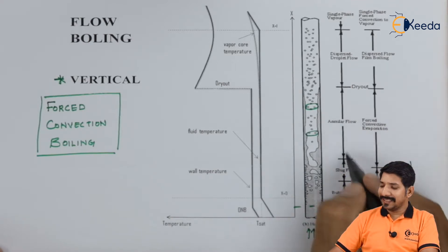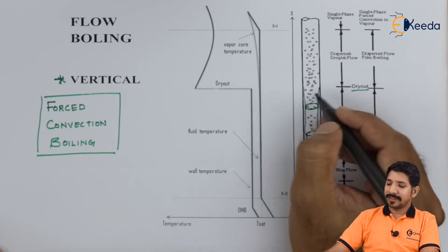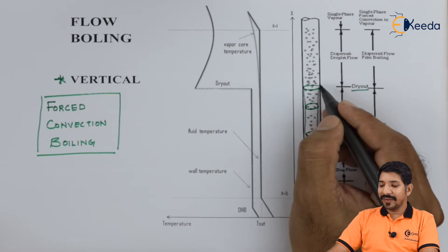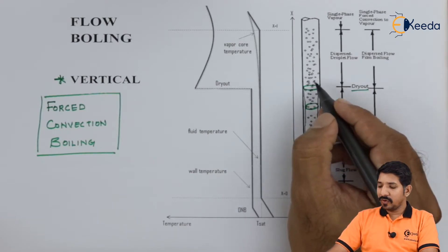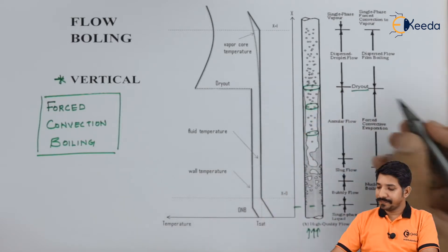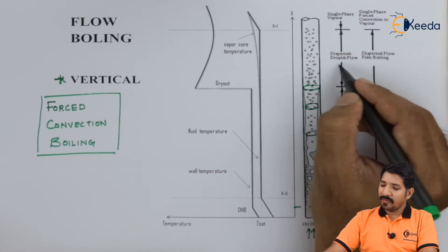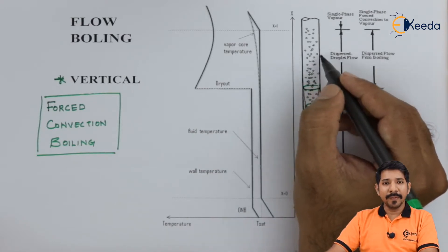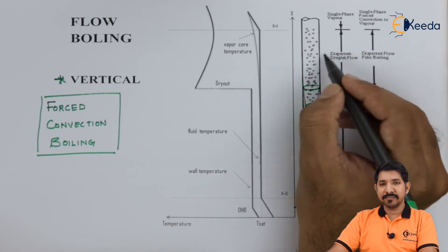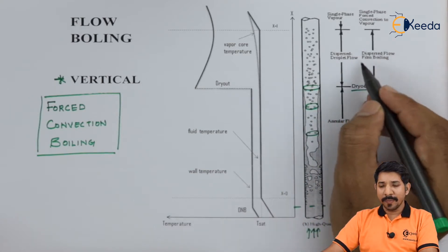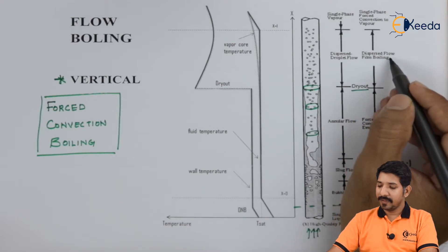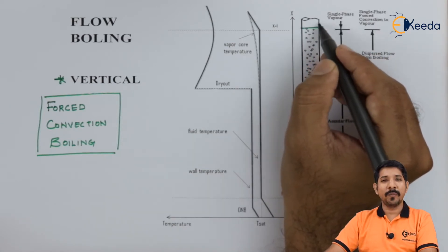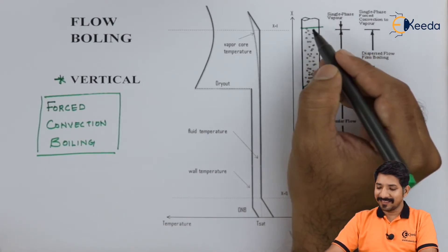Now comes the dry out. The dry out is the point where the maximum annular ring is formed — meaning no surface of the pipe is covered by fluid anymore; the entire region has only steam. Beyond dry out, a dispersed droplet flow occurs — this is called mist flow. In mist flow there is vapor with small droplets suspended in it. The heat transfer is predominantly by dispersed flow film boiling.